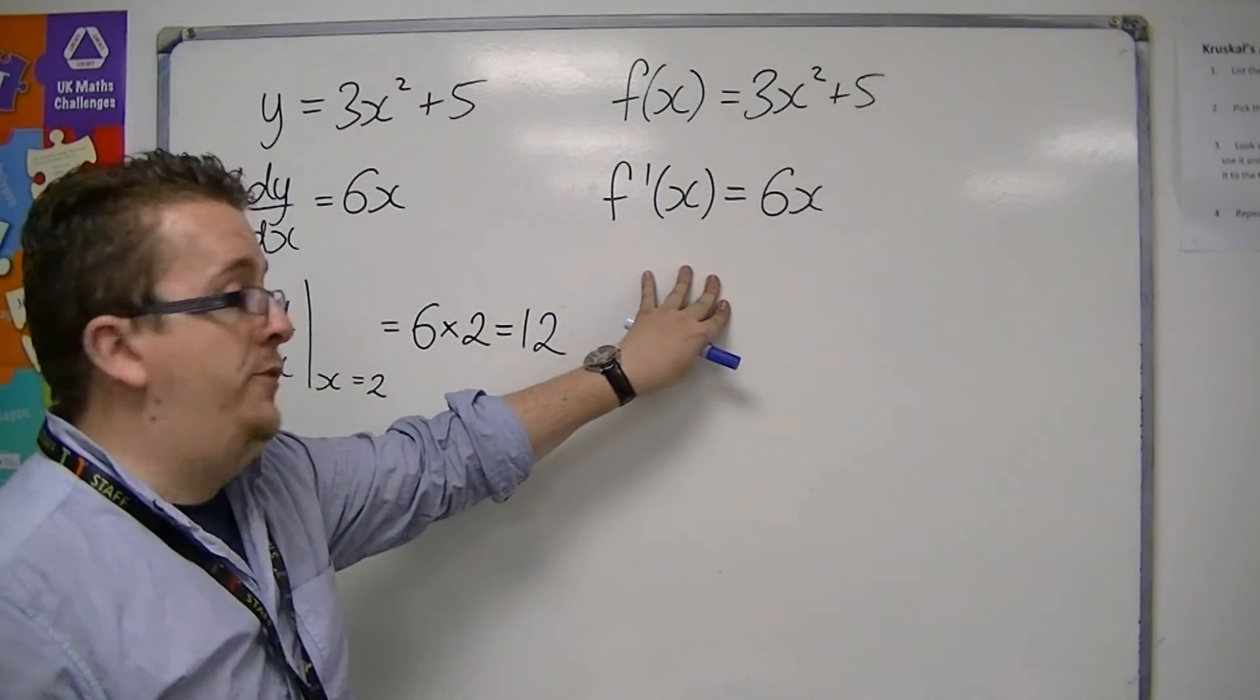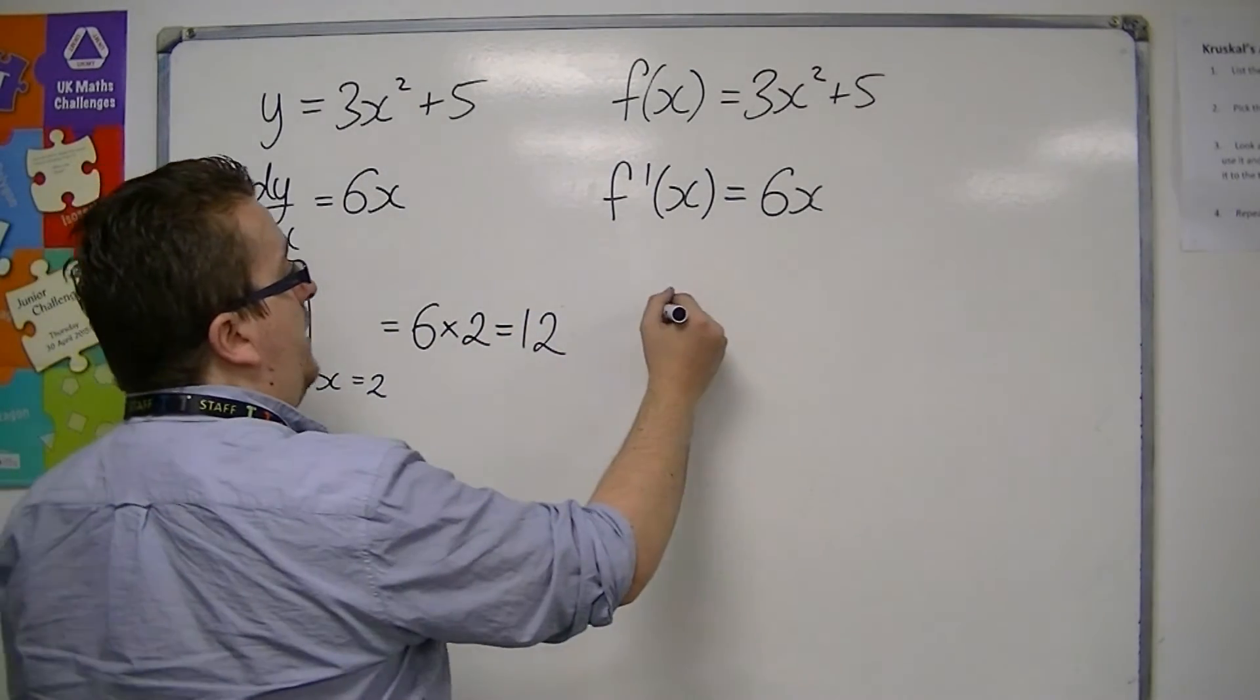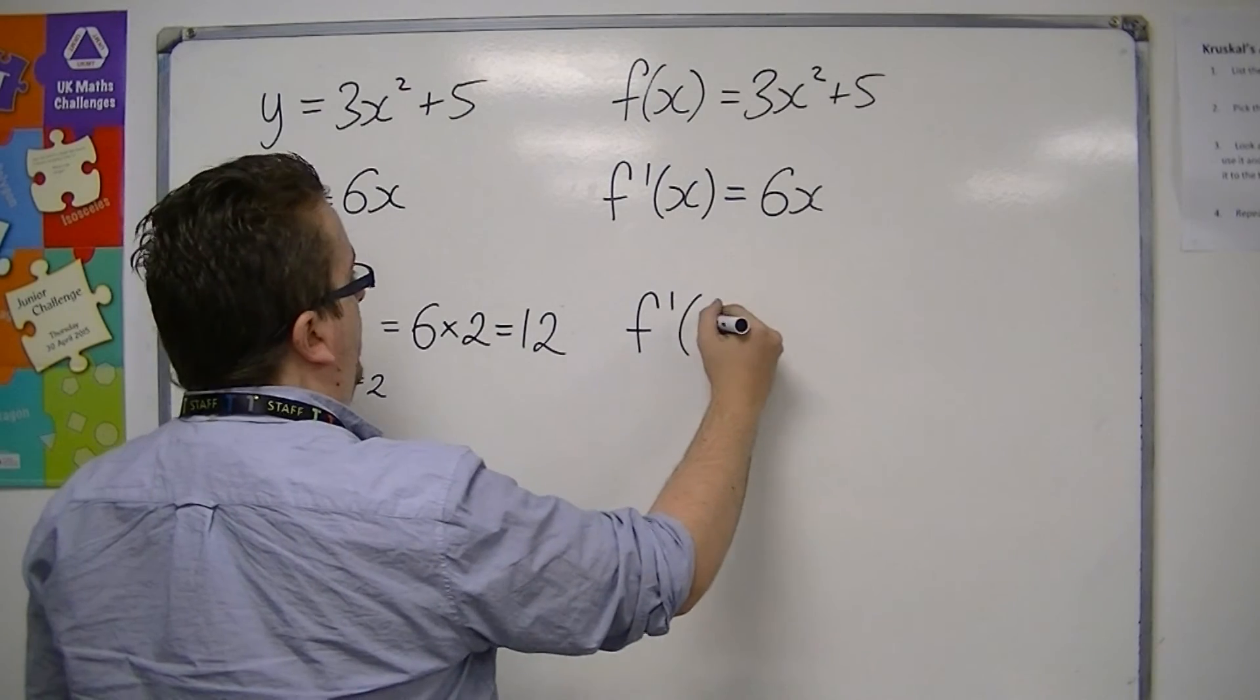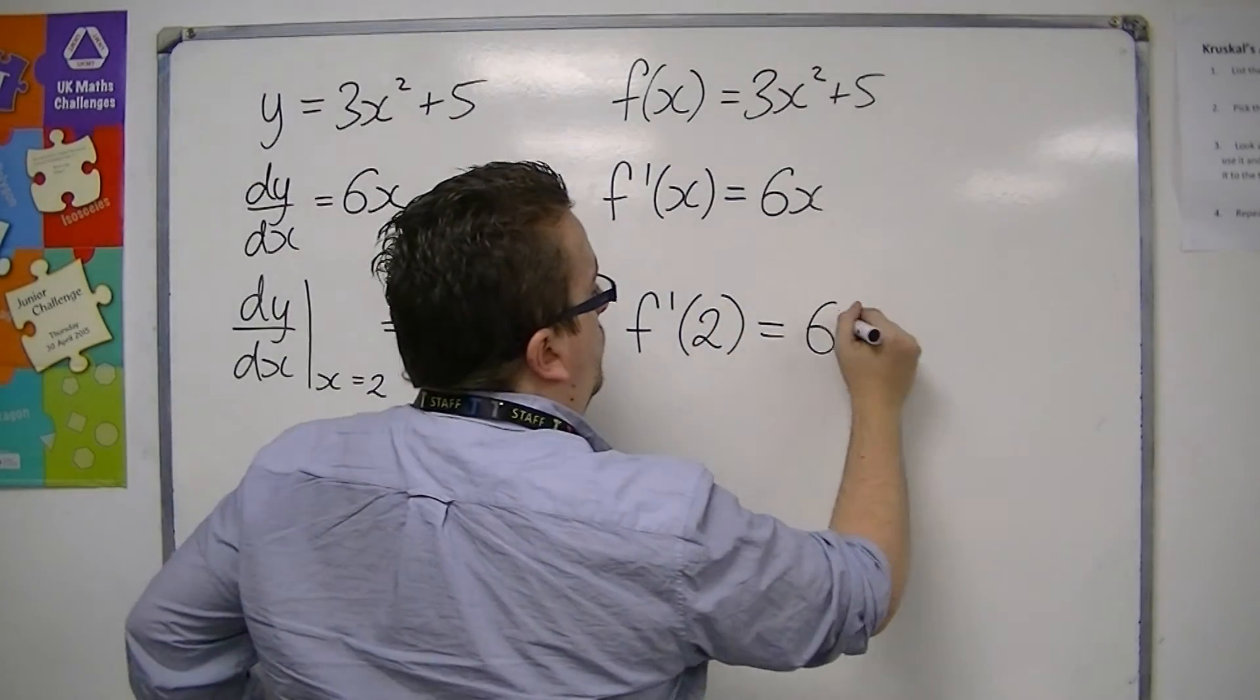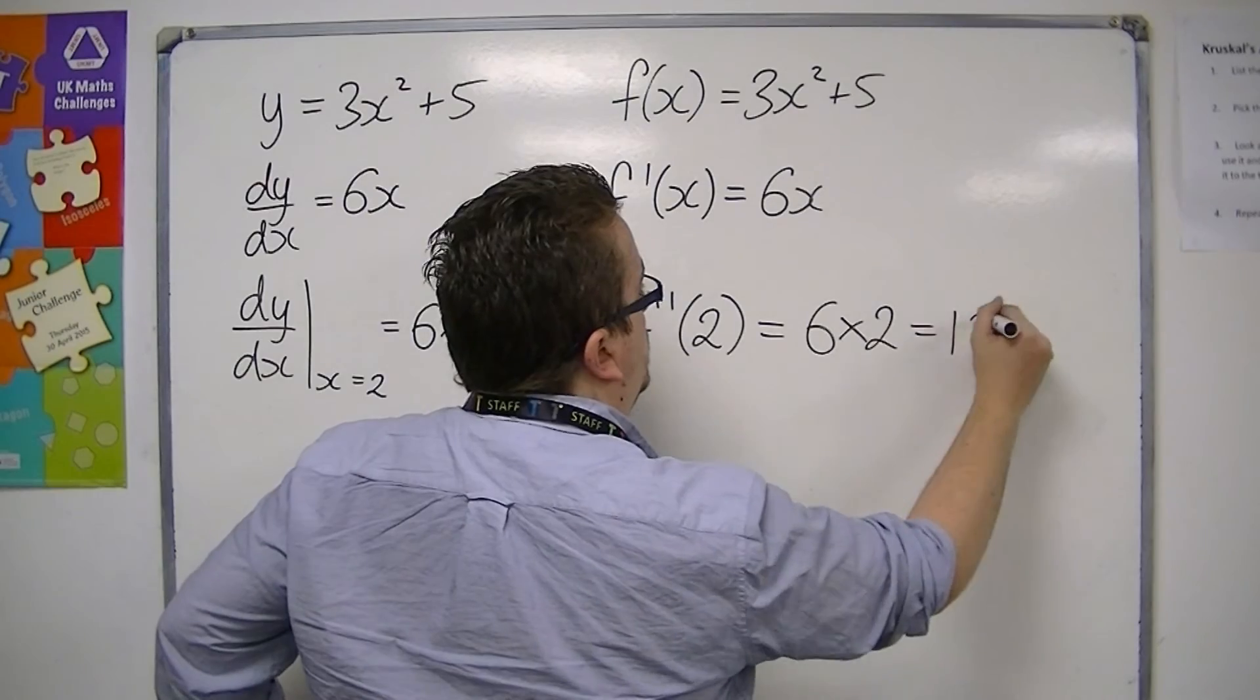For the function notation, doing exactly the same thing, we can replace the x with 2. And so we get 6 × 2, which is 12.